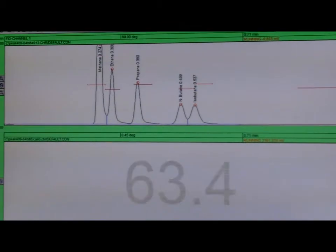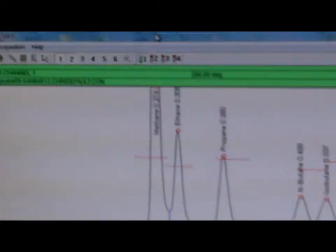The gas sampling valve takes samples at user set intervals down to one per minute and runs them through the column and second FID for percentage levels of C1 through C6.